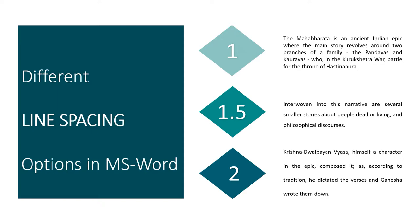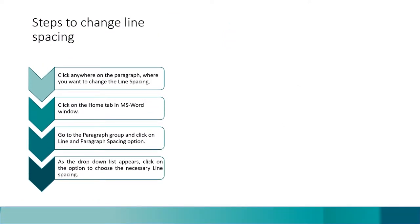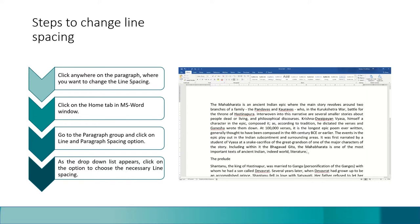Now let's see how you can change line spacing in MS Word. First, click anywhere on the paragraph where you want to change the line spacing. Click on the Home tab in the MS Word window, go to the Paragraph group, and click on the Line and Paragraph Spacing option. As the drop-down list appears, click on the option to choose the necessary line spacing. Look at the video carefully at what I am doing.